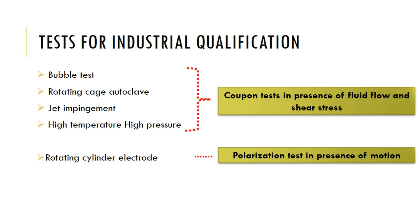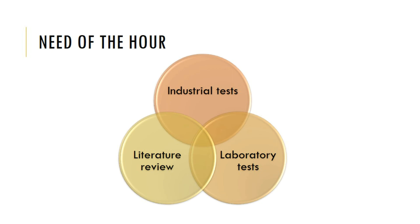As can be seen, these tests are not always carried out when inhibitors are being developed. Hence there is a gap between the tests used in industry and those used in laboratories. The need of the hour is to bring together these two types of tests and complement them with a literature review, so that we get good evidence for the chemistry of inhibitors as well as their behavior in both industrial and laboratory tests. While laboratory tests will tell us exactly how and when the inhibitor will degrade, the industrial tests will help simulate the conditions present in the field.